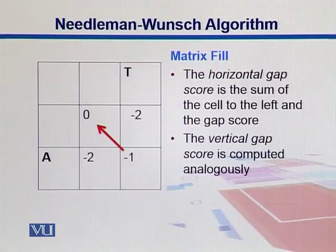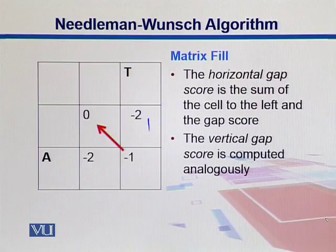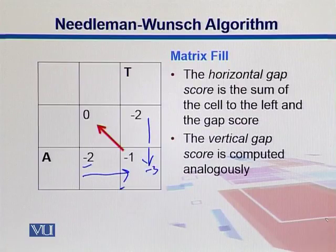Now we start filling from the first cell: A and T. Both of them mismatch, and the mismatch score is minus 1. We can come from the top, adding minus 2 plus minus 1, giving minus 3. The other possibility is we come from the left, introducing a gap, and that cumulative score is also minus 3. If we come from the diagonal, the score is 0 plus minus 1, which is minus 1.